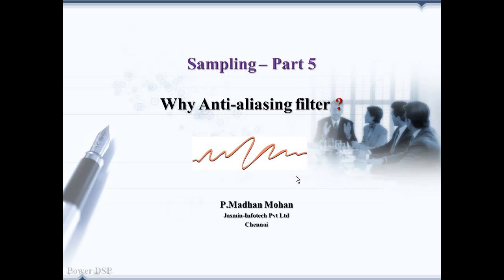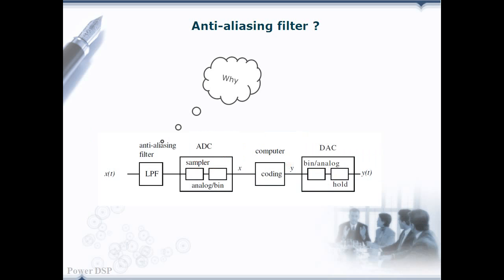Then what is the use of this anti-aliasing filter? It is going to avoid aliasing, as we are going to see in this section. We have already seen this typical DSP system. The first component is an anti-aliasing filter. Anti-aliasing filter is always a low-pass filter. Why? Let's see that with one example.